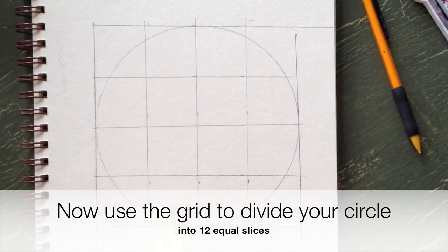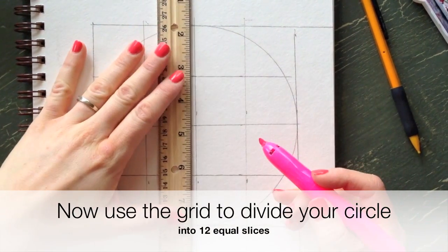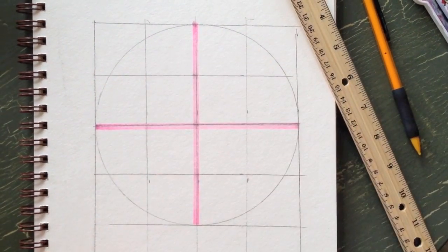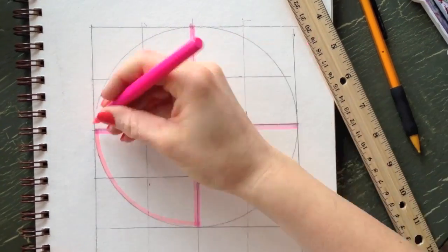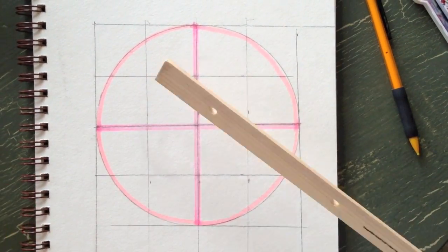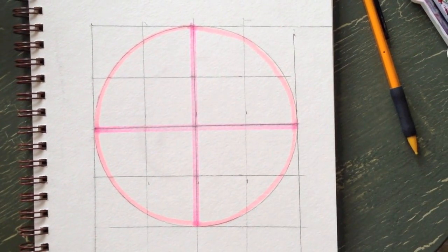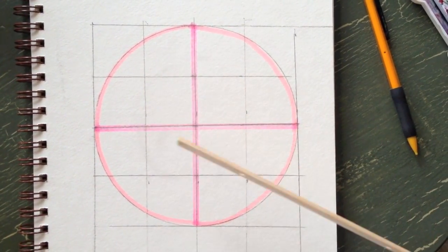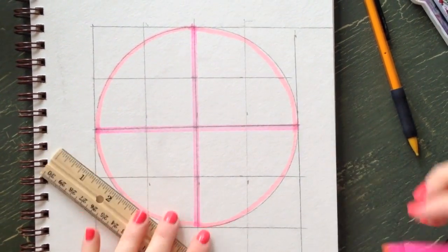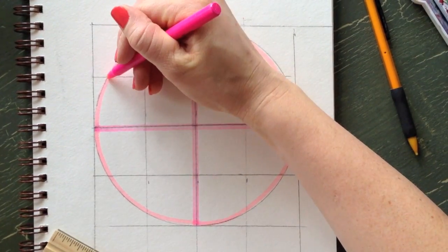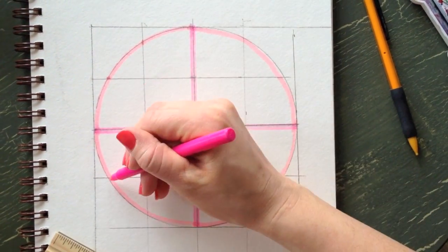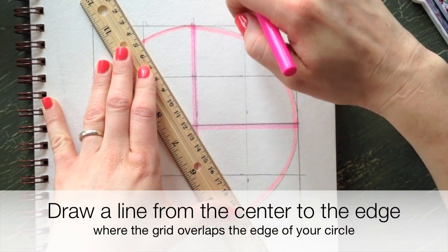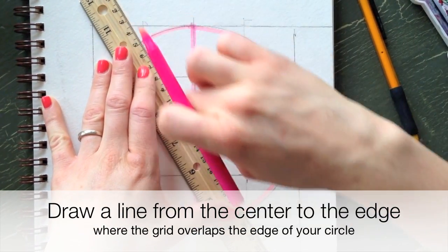So the first ones you're gonna use are just the X that goes through the middle. So now we have four pie slices. Now we have four pie slices and we need 12, so what is 12 divided by four? Three. So we need to divide each one of these into three, and wherever it hits the edge right here, that is going to be where you make your pie slice. Anywhere your lines intersect the circle, that is where you need to draw a line into the center.